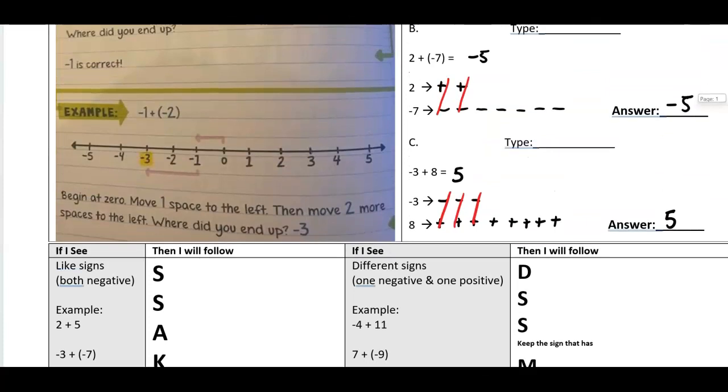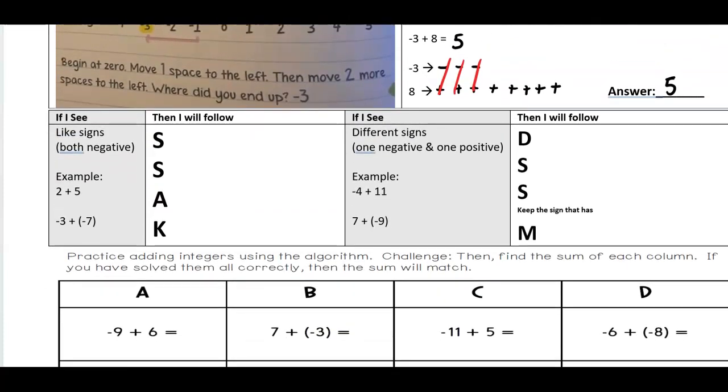but then you just got the algorithm, basically the rule for how to do this. And that is when you have the same sign, you add them and keep the sign. So if they're both positive, you add them and it stays positive. Two plus five stays seven. And then negative three plus negative seven, that becomes negative 10, because you add them and you keep the sign.